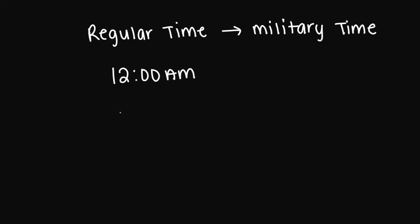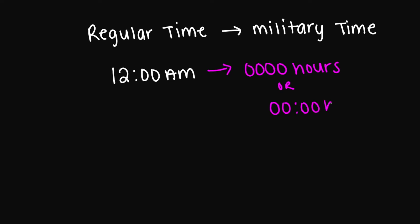So let's get into some examples. Let's say that we are converting regular time to military time. So if I gave you the time 12 a.m. regular time, military time is going to be 0100 hours. Or you can write it with the colon — it's going to be 01:00 hours written like this as well.